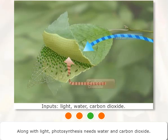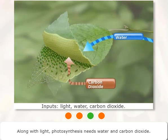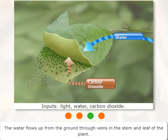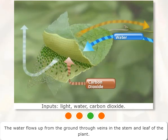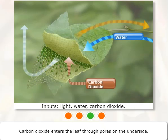Along with light, photosynthesis needs water and carbon dioxide. The water flows up from the ground through veins in the stem and leaf of the plant. Carbon dioxide enters the leaf through pores on the underside.